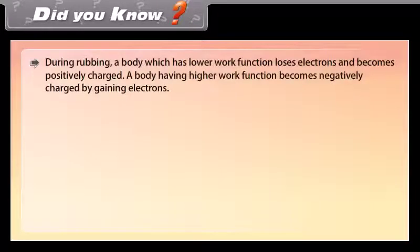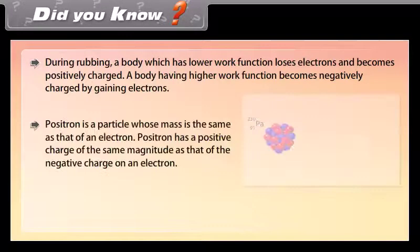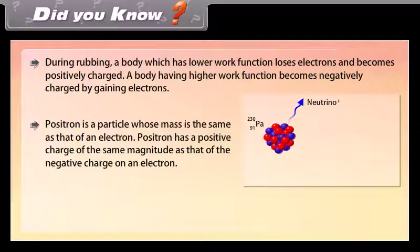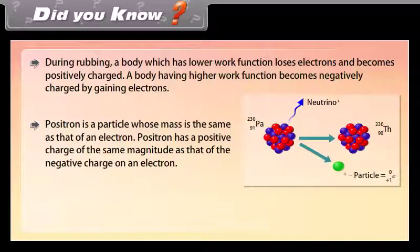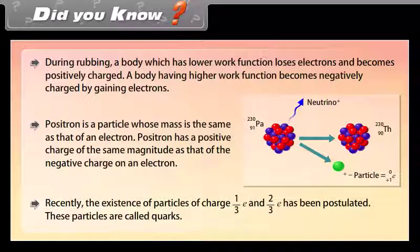Did you know: During rubbing, a body which has a lower work function loses electrons and becomes positively charged, while a body having a higher work function becomes negatively charged by gaining electrons. A positron is a particle whose mass is the same as that of an electron, but it has a positive charge of the same magnitude as the negative charge on an electron. Recently, the existence of particles of charge 1/3 e and 2/3 e has been postulated; these particles are called quarks.